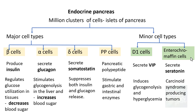To summarize, you need to remember beta cells, alpha cells, delta cells, and PP cells as the major cell types. Beta, alpha, and delta cells are the ones directly involved in regulating blood sugar levels.